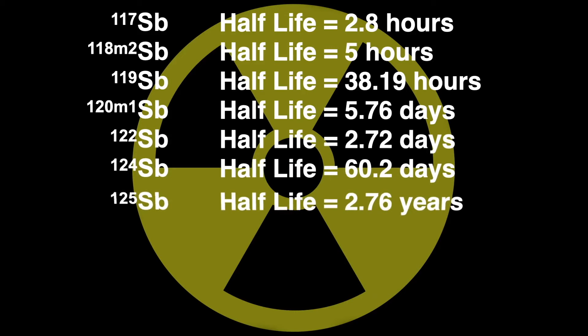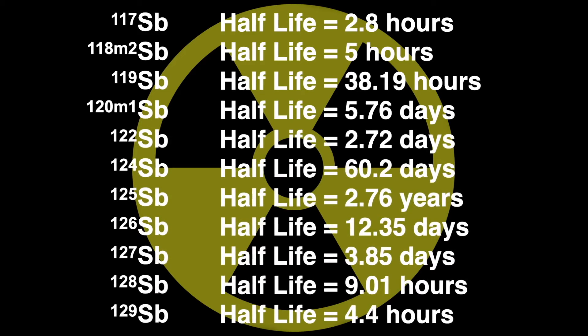Of the radioactive isotopes of antimony, these are the longest lived, the ones with half-lives over one hour. More about half-lives in the next slide. The longest half-life here is 2.76 years for antimony 125. All of the radioactive antimony isotopes are so short-lived that any existing radioactive antimony must be made either in stars or nuclear reactors.